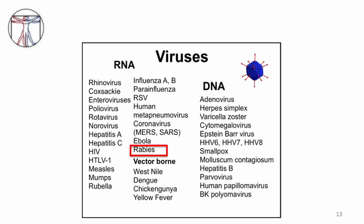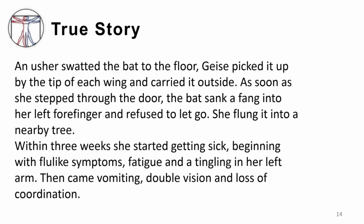Now I'd like to talk about rabies virus, starting with a true story. An usher swatted a bat to the floor. Geesey picked it up by the tip of each wing, carried it outside, and the bat sunk a fang into her left forefinger and refused to let go. She flung it into a nearby tree and didn't think more about it. Within three weeks she started getting sick — beginning with flu-like symptoms, fatigue, and tingling in her left arm — then came vomiting, double vision, and loss of coordination. This is the true story of the first person to survive symptomatic rabies in the world. She survived with experimental treatment, and five other people have survived symptomatic rabies since 2011. Previously, rabies was universally fatal.